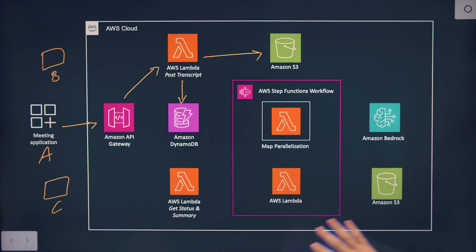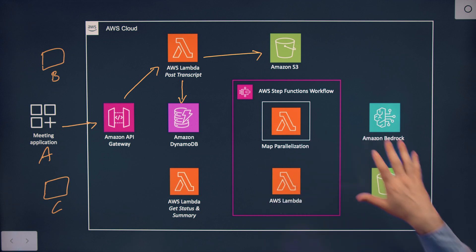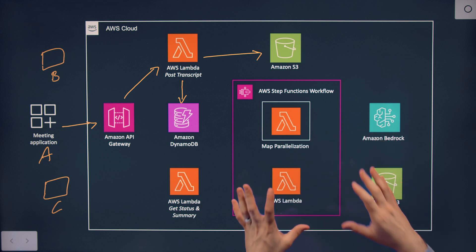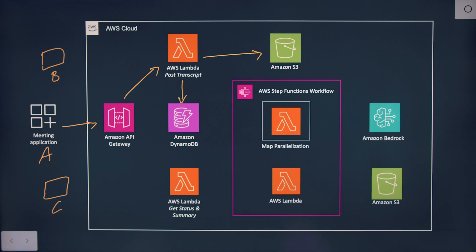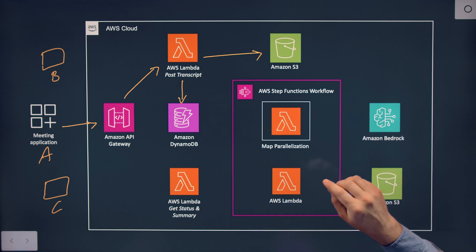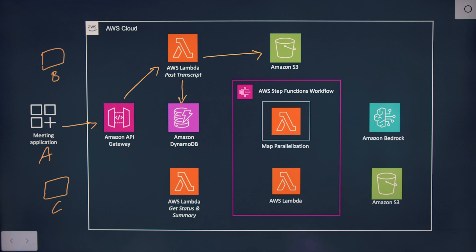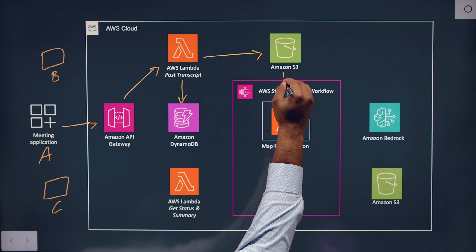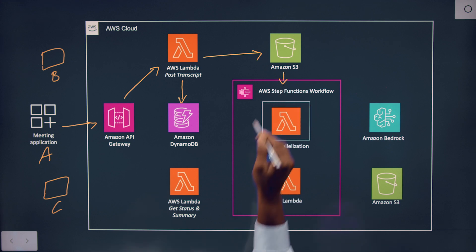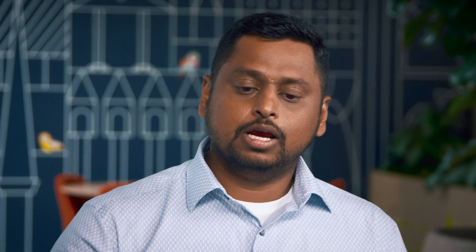This seems like the brain of the operation — this Step Functions workflow. Can you tell us a little bit more about how this map parallelization box and this Lambda function work together? When we store the transcription to S3, it kicks off a Step Functions workflow.